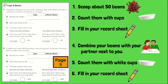All right, my friends. On page 11 in the breakout rooms, you are each going to scoop out 50 beans, then count them with your cups. Share with your partners what you've collected and fill in the record sheet. Then combine your beans together — or whatever medium you were using to count — count them with the cups, and fill out your record sheet.